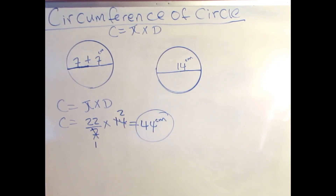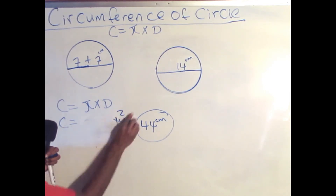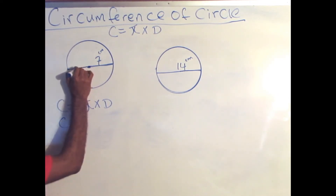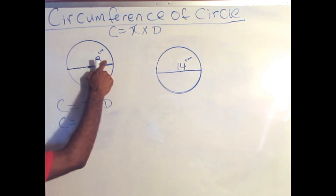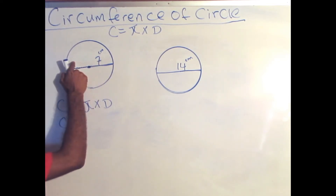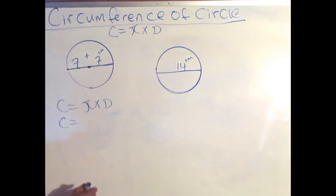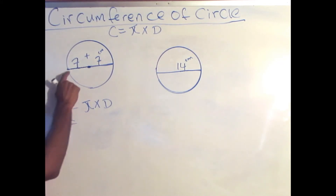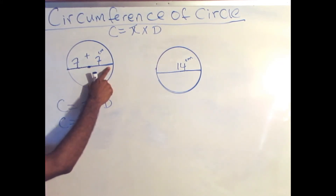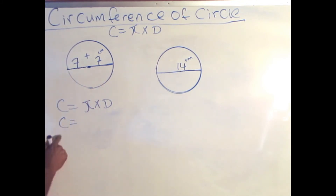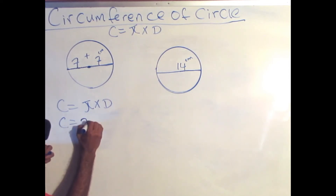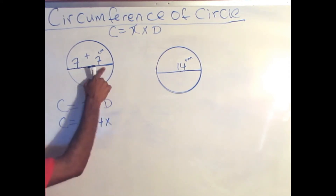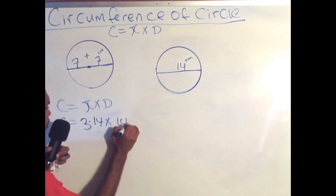Now let's solve this very same problem using pi as 3.14. I need to add the next quarter of the circle to get my diameter. So if this quarter is 7, the next quarter is also 7. Adding 7 plus 7 gives me 14, which is my full diameter. So I will solve using pi as 3.14 times my diameter, which is 7 plus 7, which is 14.